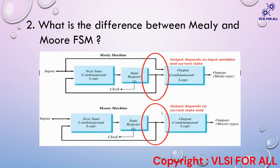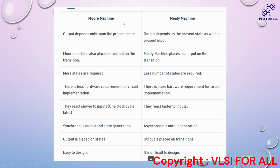Looking at the comparison table: in the Moore machine, output depends only upon the present state, whereas in the Mealy machine, output depends on the present state as well as the present input. Moore places its output on states while Mealy places its output on transitions. Moore requires more states whereas Mealy requires fewer states. Moore requires less hardware for circuit implementation whereas Mealy requires more hardware.